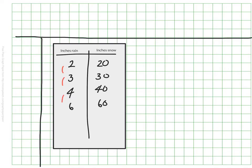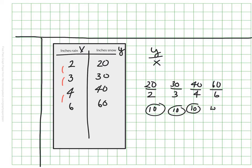So I'll use rain as X and snow as Y. And I'm going to do that same comparison of Y over X to see if the ratio is consistent. And when I look at them, I can see 20 divided by 2, 30 divided by 3, and so on. They all simplify to 10, which means the unit rate for the unit ratio is consistently 10 every single time.